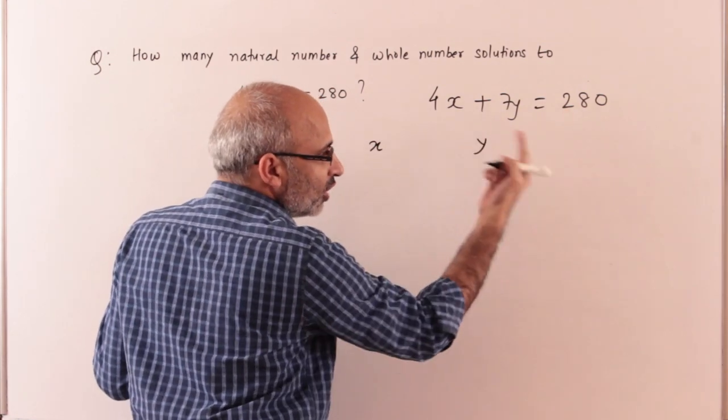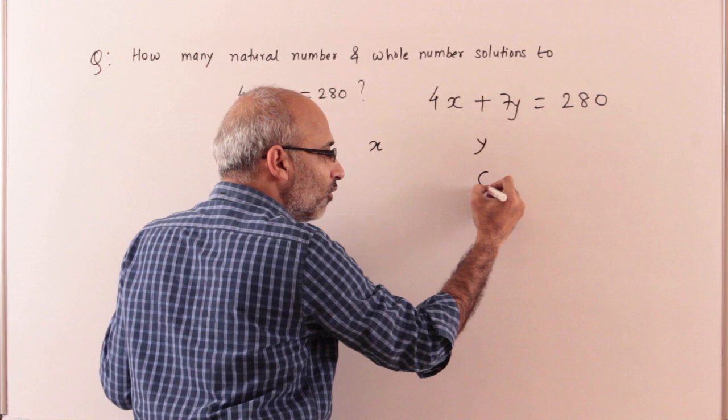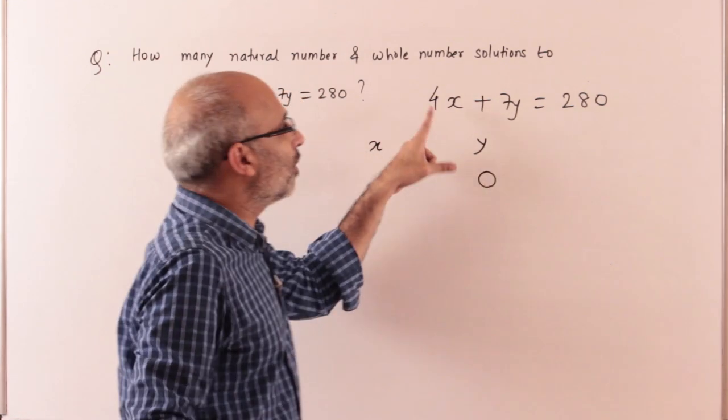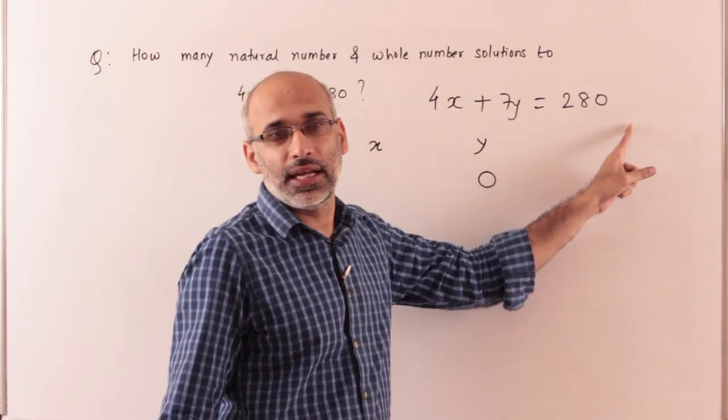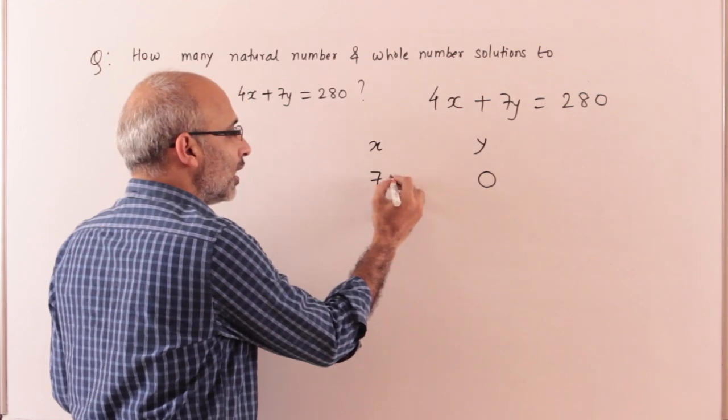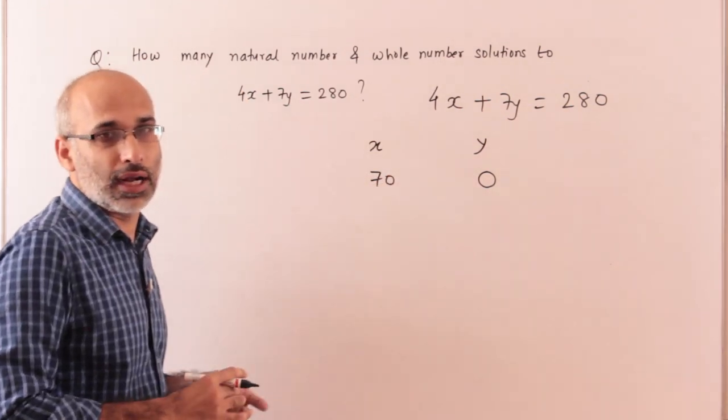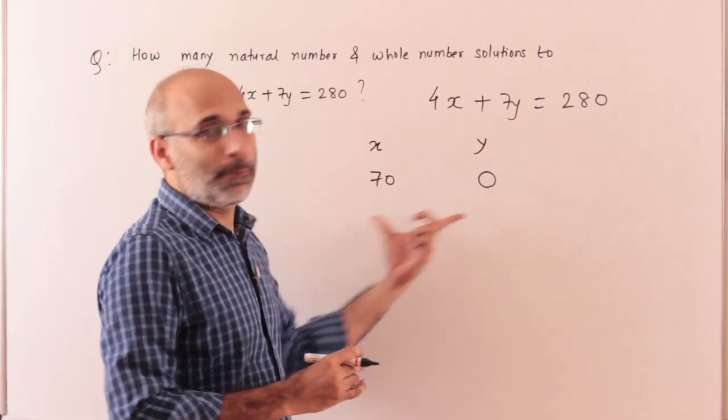If it's divisible, if the value of y is 0, the equation will be 4x equals 280. So x value is 70. This is my first solution, my first possibility.